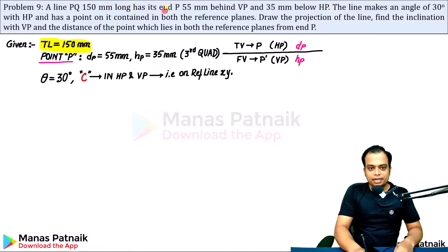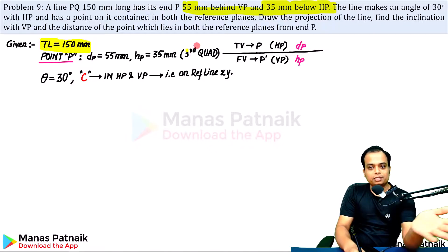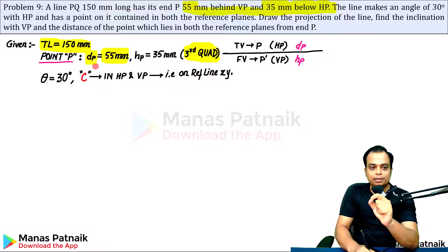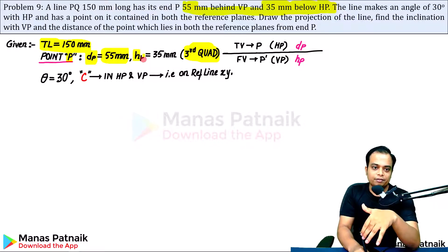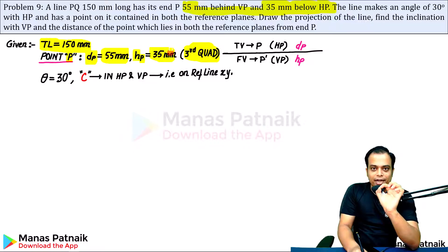It has its end P 55 mm behind VP and 35 mm below HP, behind and below. It's a clear cut case of third quadrant. The distance behind VP is 55, represented by DP. P subscript is for point P. D means distance from VP. Similarly, H means distance above or below HP.